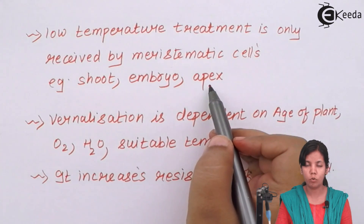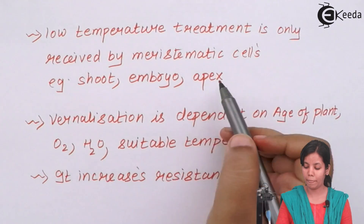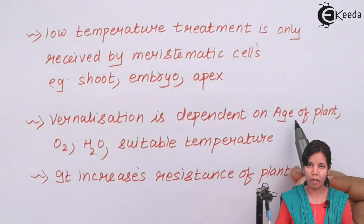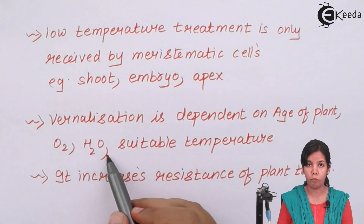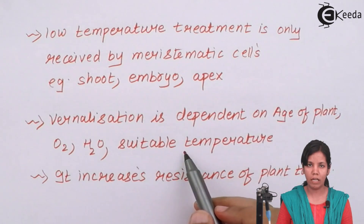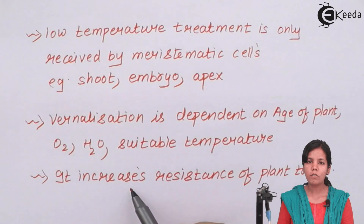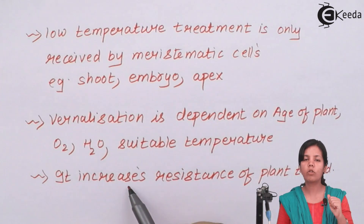The apical bud and lateral bud both have meristematic tissue, and these meristematic tissues differentiate into different forms of tissues. Vernalization is dependent on the age of the plant — shorter, younger plants are more viable for vernalization. Oxygen availability for respiration, availability of water, and suitable temperatures are also important factors. The temperature used for vernalization is 0 to 6 degrees Celsius, with 0 to 4 degrees Celsius being the most appropriate range. The importance of vernalization is that it shortens the vegetative phase and concentrates more on the reproductive phase.